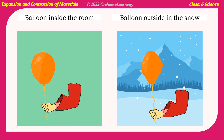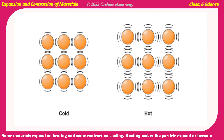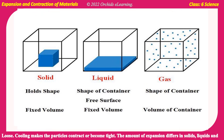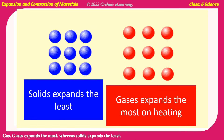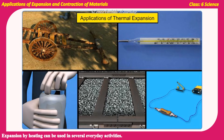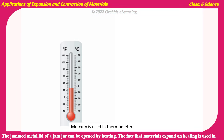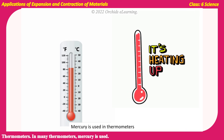Expansion and contraction of materials: Some materials expand on heating and some contract on cooling. Heating makes the particles expand or become loose, while cooling makes the particles contract or become tight. The amount of expansion differs in solids, liquids, and gases. Gases expand the most, whereas solids expand the least. Expansion by heating can be used in several everyday activities. For example, a jammed metal lid of a jam jar can be opened by heating. The fact that materials expand on heating is also used in thermometers, where mercury is commonly used.